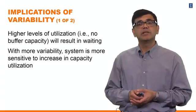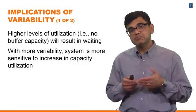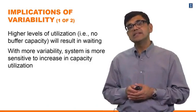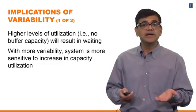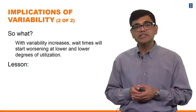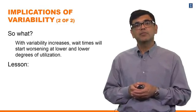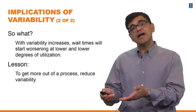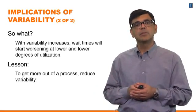So what are the implications of variability if you put all this together? Higher levels of utilization will result in waiting. If you try to plan for 100%, stuff will happen and cause delays. As variability increases, the sensitivity of wait time and flow time to utilization gets higher — wait times will start worsening at lower and lower degrees of utilization. The lesson is: reduce variability. If you can reduce variability, you can plan for a higher degree of utilization and at the same time not have higher flow times or wait times.